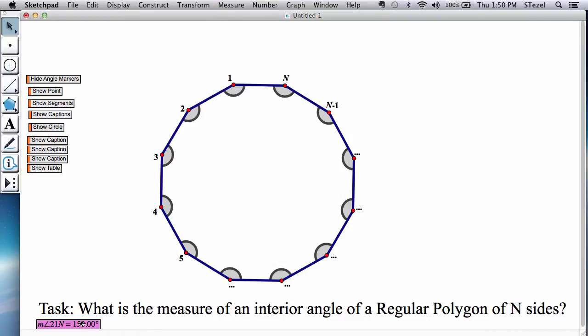And in this case, it is 150 degrees, because what I have here is a 12-sided regular polygon called a dodecagon.